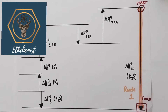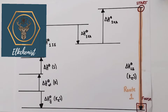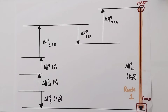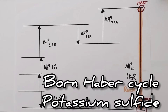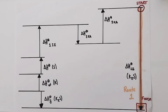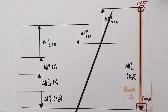Hi, welcome to this Alchemist Chemistry A-Level video looking at Born-Haber Cycles. This particular Born-Haber Cycle will be for potassium sulphide. This is the third video in a series of videos on Born-Haber Cycles. If you want to check out some of those earlier videos, please do click on the card which will appear now.